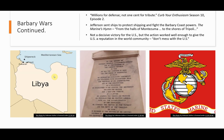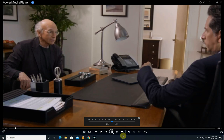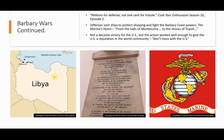The Barbary Wars — millions for defense, not one cent for tribute. Jefferson sent ships to protect shipping and fight the Barbary coast powers. You might have heard the Marines' hymn: from the halls of Montezuma to the shores of Tripoli. The halls of Montezuma obviously refers to conflicts with Mexico; the shores of Tripoli refers to this Barbary coast problem. While sending in the Navy and the Marines was not a decisive victory for the U.S., the action worked well enough to give the U.S. a reputation in the world community — a net positive. It let people know the U.S. does have a Navy that can protect its shipping, which is something you really need to be taken seriously on the world stage.